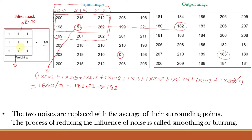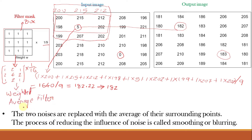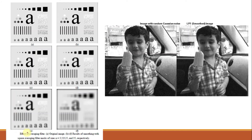Sometimes, rather than using a box filter with equal coefficients, we use a weighted average filter — for example, multiplied by 1/16 since the total of all coefficients is 16. This yields a weighted average where pixels are multiplied by different coefficients, giving more importance to some pixels at the expense of others. The strategy of weighting the center point highest and reducing coefficients with increasing distance from the origin is an attempt to reduce blurring in the smoothing process.